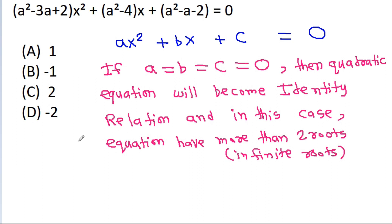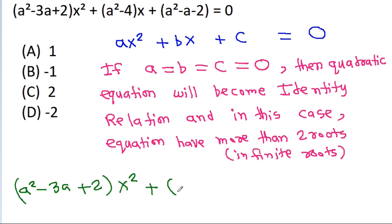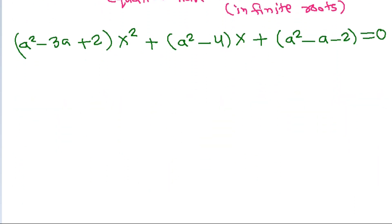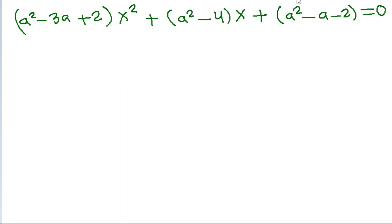The given equation is (a²- 3a + 2)x² + (a² - 4)x + (a² - a - 2) = 0. For more than two roots, we need a² - 3a + 2 = 0.